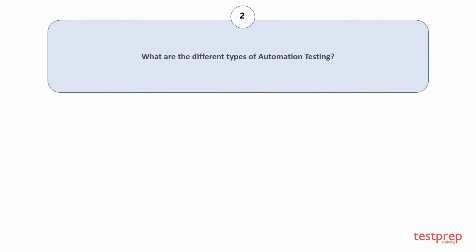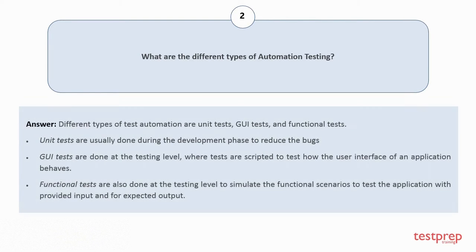Question number two: What are the different types of automation testing? Different types of test automation are unit tests, GUI tests, and functional tests. Unit tests are usually done during the development phase to reduce bugs. GUI tests are done at the testing level where tests are scripted to test how the user interface behaves. Functional tests simulate functional scenarios to test the application with provided input and expected output.